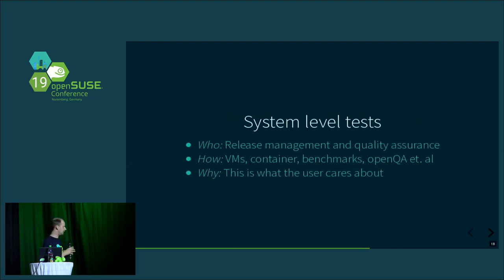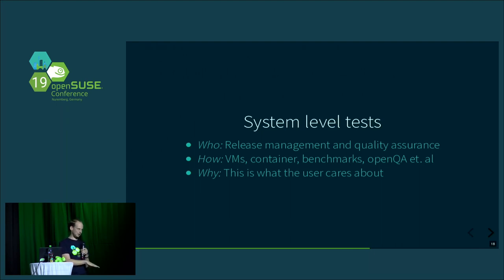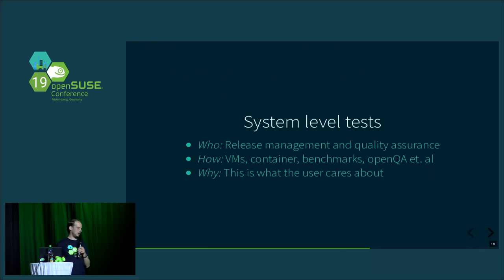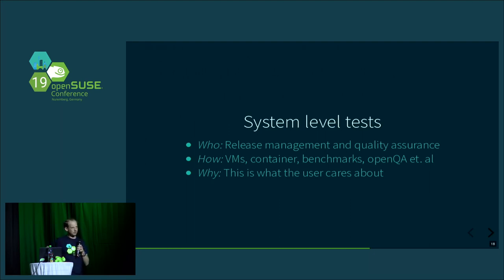For system level tests, who is doing that? This is where release management and quality assurance come into play. As a QA SUSE employee and QA engineer, we focus on the system level — we rely on what is done at the package level and try to look at the product as a whole. How is it done? Mainly using VMs because they are easy to scale and really isolated. Also using containers, benchmarks, and other testing frameworks within openQA but also in other contexts. Why? Because this is what the user cares about when using openSUSE as a distribution.